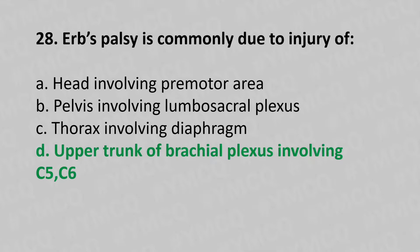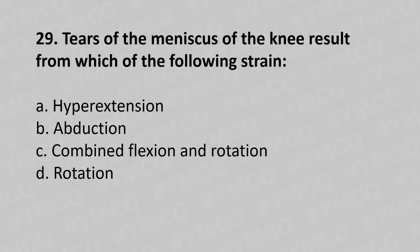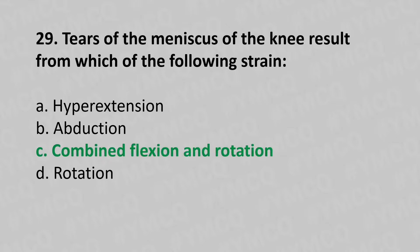Moving to our 29th question: the tear of the meniscus of the knee results from which of the following strain? Option A hyperextension, option B abduction, option C combined flexion and rotation, option D rotation. The answer is option C combined flexion and rotation.